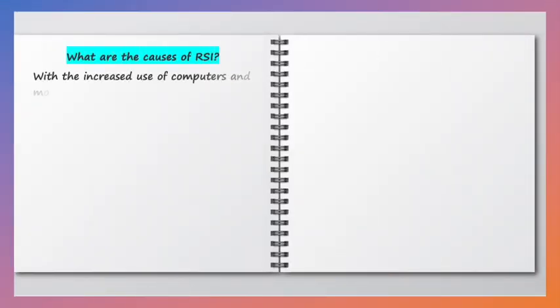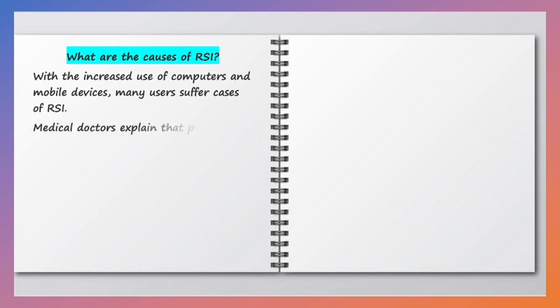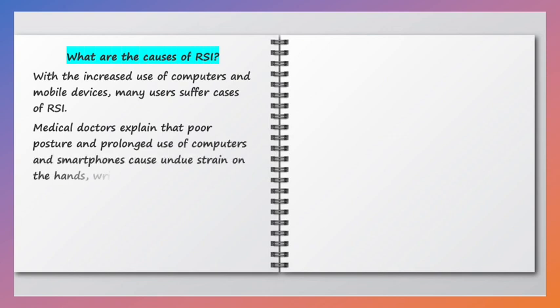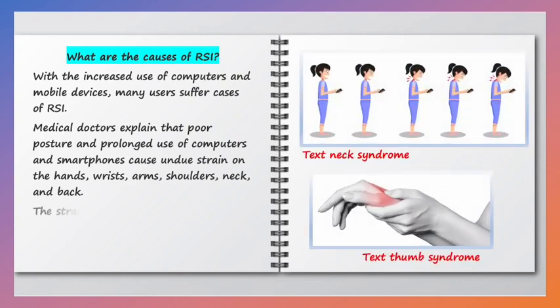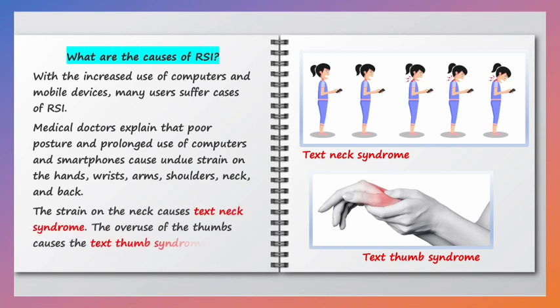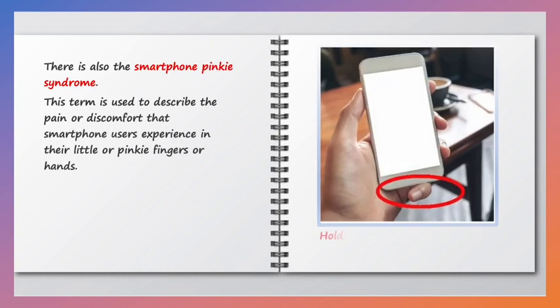What are the causes of RSI? With the increased use of computers and mobile devices, many users suffer cases of RSI. Medical doctors explain that poor posture and prolonged use of computers and smartphones cause undue strain on the hands, wrists, arms, shoulders, neck, and the back. The strain on the neck causes text neck syndrome. The overuse of the thumbs causes the text thumb syndrome. There is also the smartphone pinky syndrome — a term used to describe the pain or discomfort that smartphone users experience in their little or pinky fingers or hands.